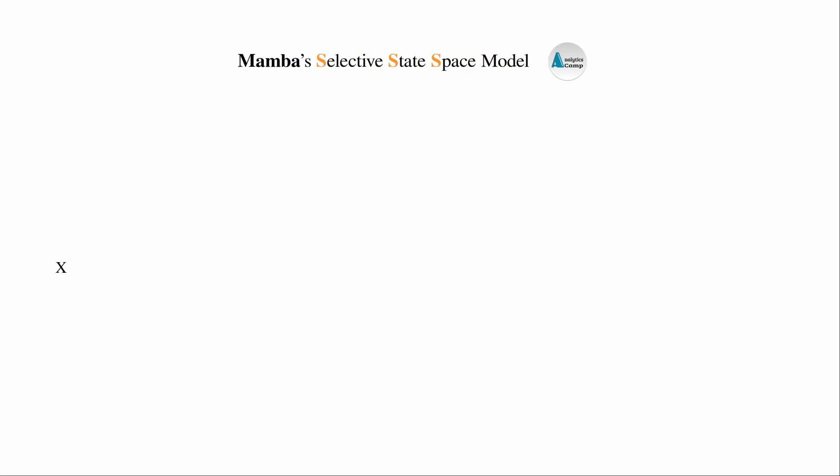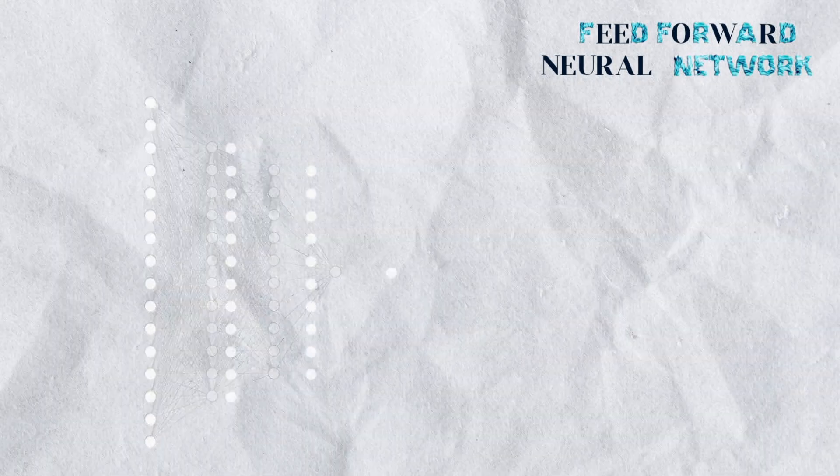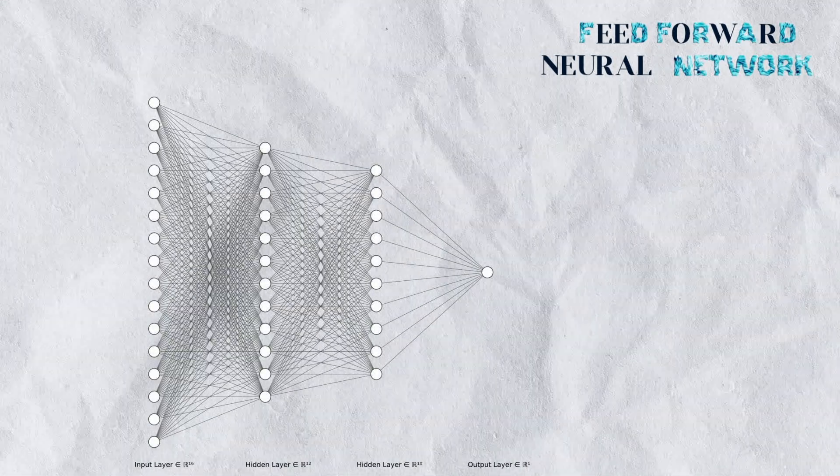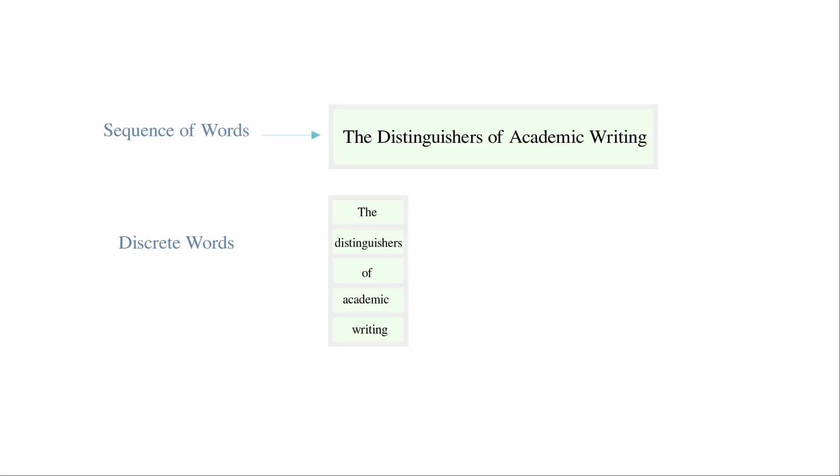In the first stage, the one-dimensional input as a word sequence enters the discretization unit where continuous parameters of A and B get converted into discrete parameters. This helps the model to more efficiently handle discrete data, for example discrete words or tokens in a sequence or sentence.